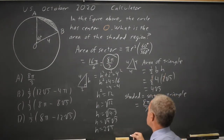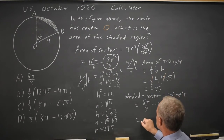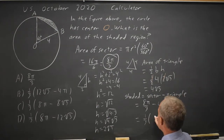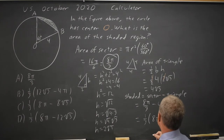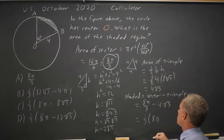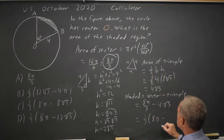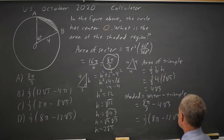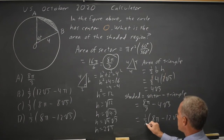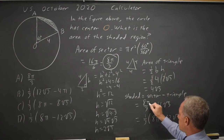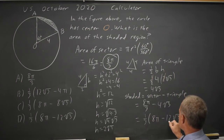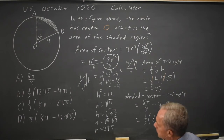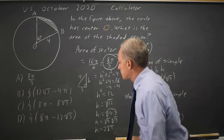College Board, being College Board, factored out one third. So we still have the 8π, and if I factor one third out of 4 root 3, I get 12 root 3. Checking: one third of 8π is 8π over 3, and one third of negative 12 root 3 is negative 4 root 3. So that is correct, and that is choice D.